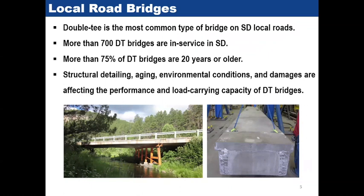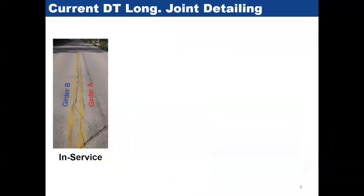We found that structural detailing, aging, cold conditions, weathering, and bad detailing all change how these bridges perform and how the live load capacity will change over time. One common damage reported for double T bridges is reflective cracks between the girders. Here is a photograph where you can see girders A and B with continuous and long cracks along the length of the bridge.